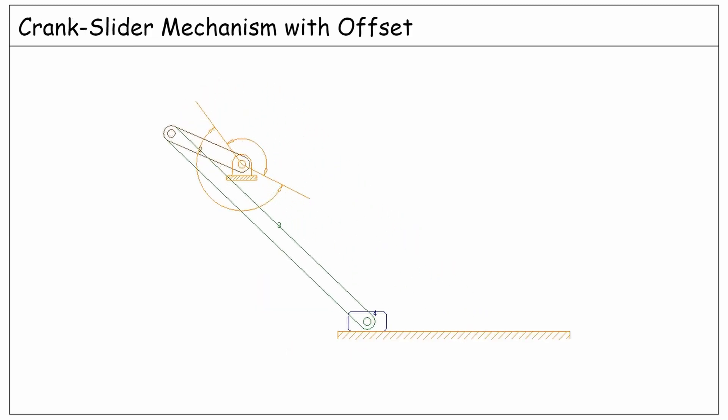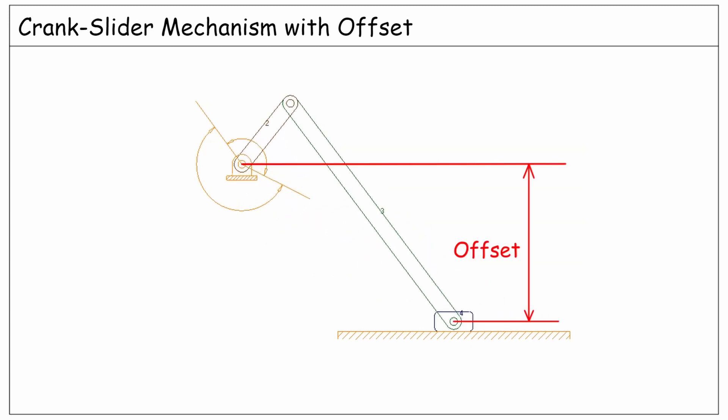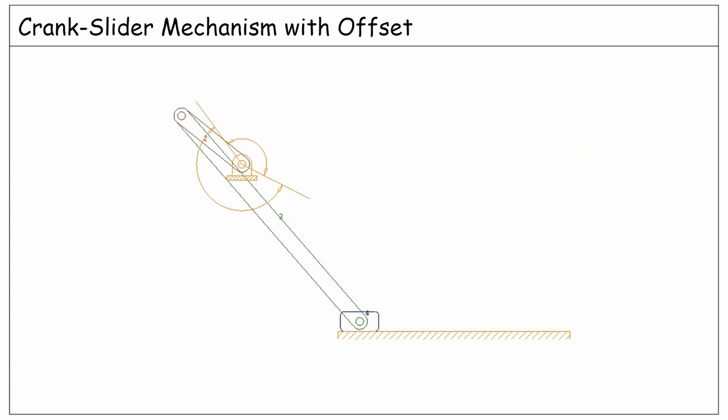A special case of a slider crank mechanism is when it is designed with an offset, such that the path of the slider does not intersect the crank axis. In this mechanism, there are two extreme positions for this slider. One of them is here, when the driver and the coupler become aligned with each other, and the other one is here, when they are again aligned in a different way. The distance between these two extreme positions is called a stroke.